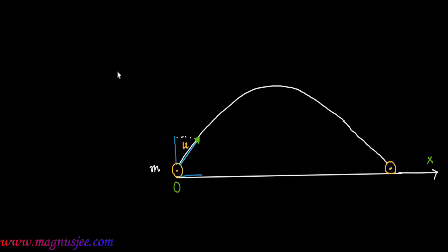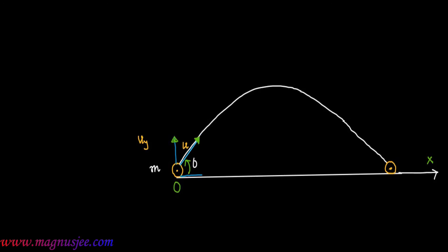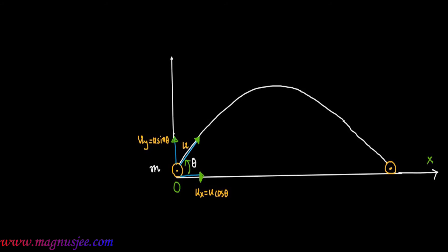This initial velocity U is resolved into two rectangular components — two mutually perpendicular components. The horizontal component of initial velocity U is U_x, which is equal to U cos theta. The vertical component of the initial velocity is U_y, which is equal to U sin theta.